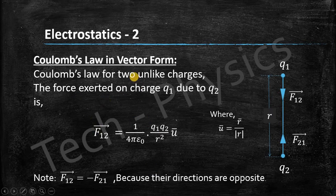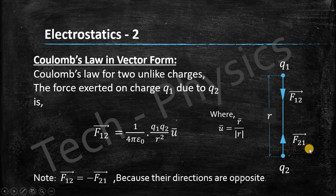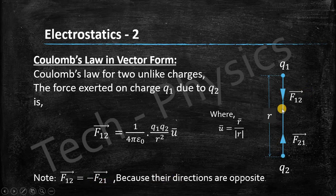Coulomb's law in vector form — as soon as we deal with the vector form, we have to talk about directions. We look at the overhead bars everywhere. Here we are talking about the force on charge Q1 due to charge Q2, and these two charges are unlike charges, so we can see the force of attraction between them. F12 bar is in the opposite direction to F21 bar, and we can always say F12 = −F21 from Newton's third law.